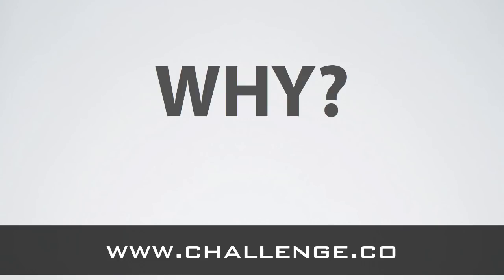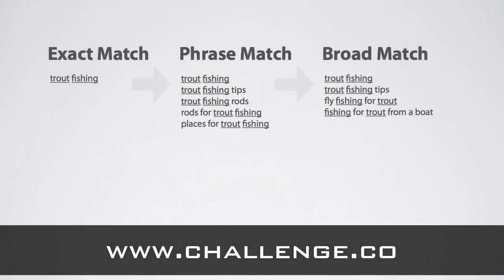What we have observed is that over time your content will first start to appear in Google for the exact match term first. Then as you add more and more pages and get more links to your site, it will start to appear for more phrase match terms, and finally over the long term Google will start showing pages from your site for broad match terms. This is your ultimate goal, and by doing the research into the three types of traffic you can see how it may grow over time.